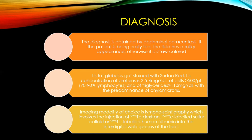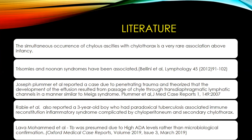The imaging modality of choice is lymphoscintigraphy by injection of technetium-99 dextran or technetium-99 labeled sulfur colloid. The simultaneous occurrence of chylous ascites with chylothorax is a very rare association. In infancy, trisomies and Noonan syndrome have been associated due to lymphatic abnormalities. Literature by Joseph Plummer describes effusion of chyle through transdiaphragmatic lymphatic channels similar to Meigs syndrome. Rabi reported a three-year-old boy who developed both chyloperitoneum and chylothorax due to a paradoxical tuberculosis reaction. Lava presumed TB as the result, but in our case TB was presumed wrong due to negative findings.